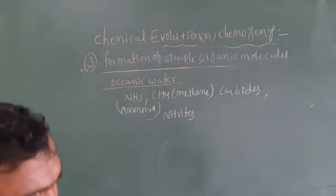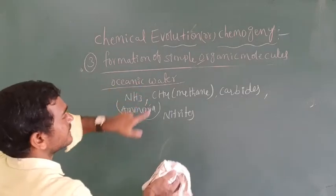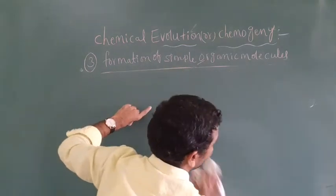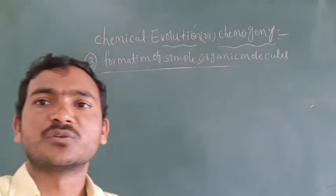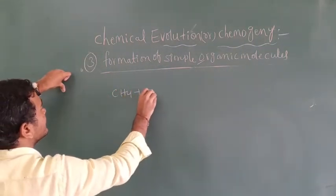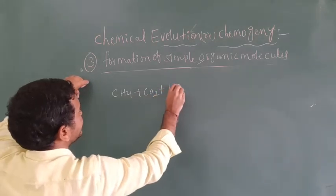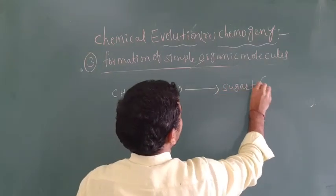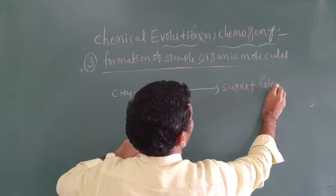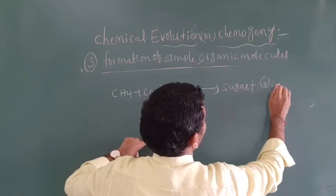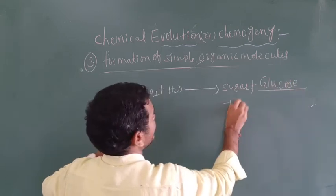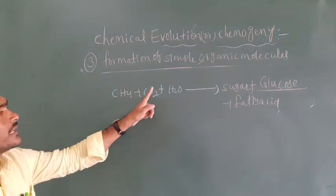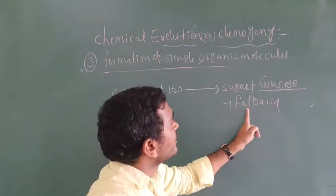These chemicals combined together to form the following molecules. CH₄ plus CO₂ plus H₂O together form sugar (glucose) and fatty acids. So methane, carbon dioxide, and hydrogen together form glucose and fatty acids.